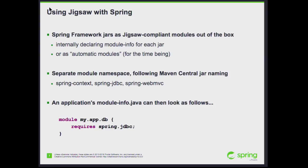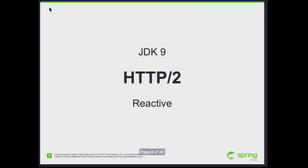A word of caution: Jigsaw is a moving target — the defaults may change. Currently it all works fine for Spring's purposes, but no guarantees whether that's still the case in three months' time. We make sure we are being heard, and we're not the only framework with those requirements. If it works for Hibernate and other libraries, then it also works for us. We need reflective access and we need to find classpath resources. It's also an opt-in model — you can have a perfectly fine Spring experience with classpath mode on JDK 9.